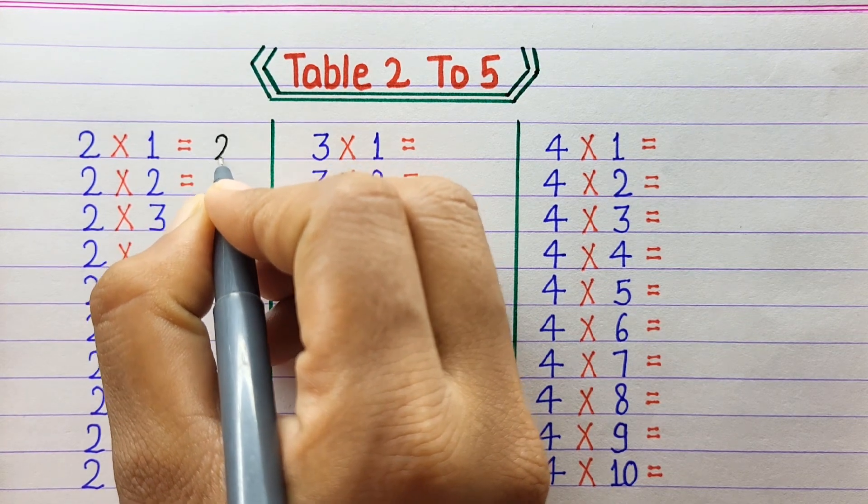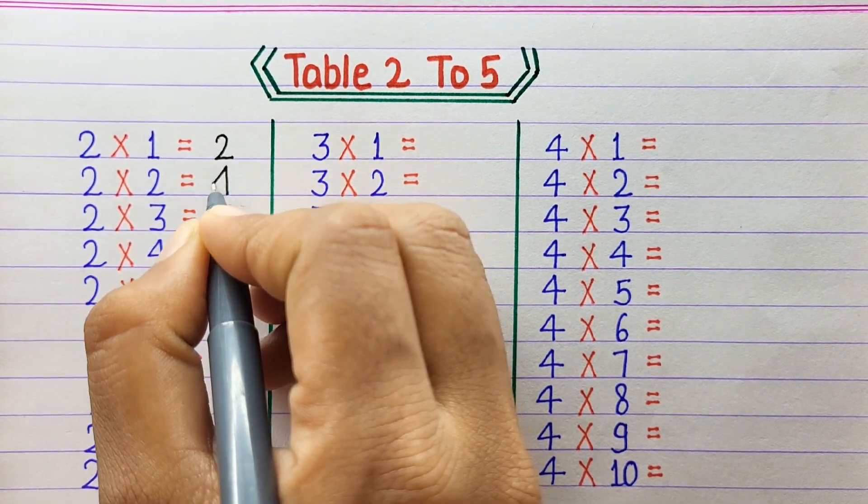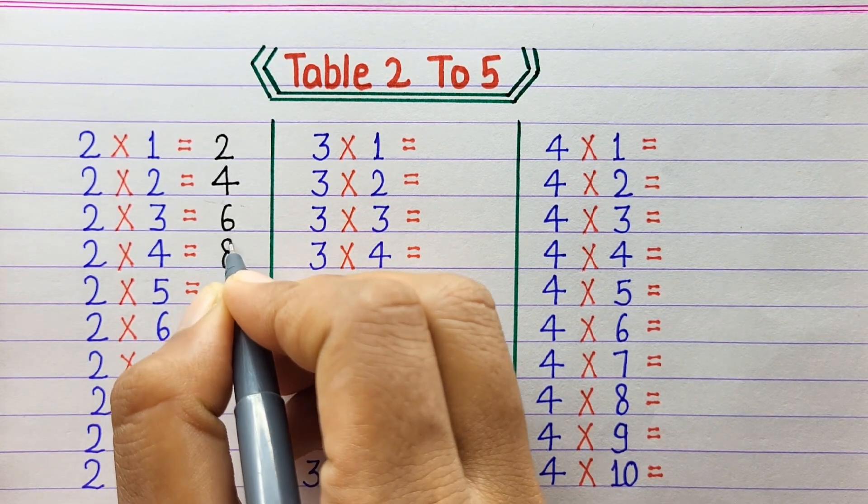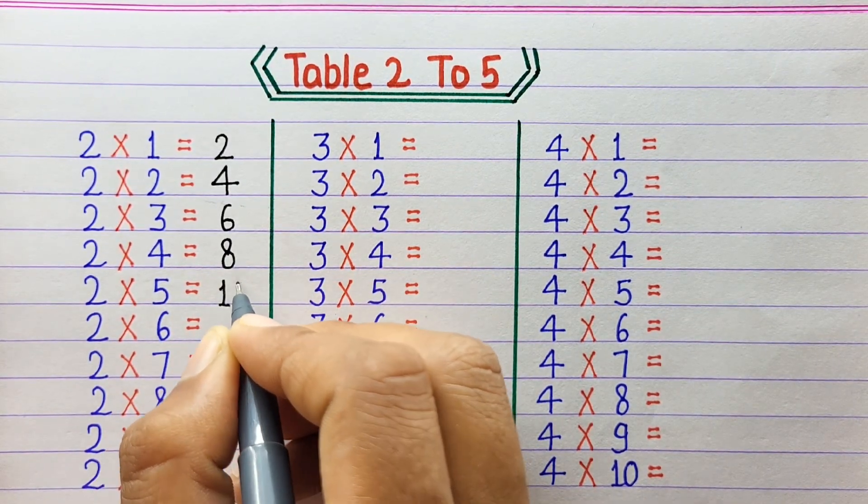So let's start. 2 times 1 is 2, 2 times 2 is 4, 2 times 3 is 6, 2 times 4 is 8, 2 times 5 is 10.